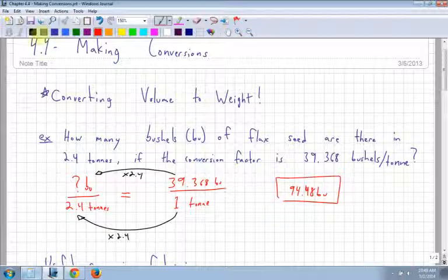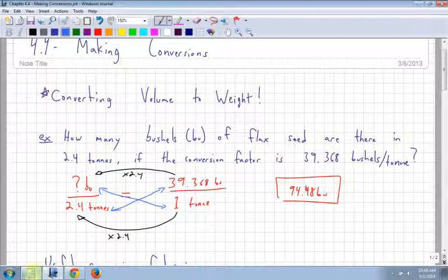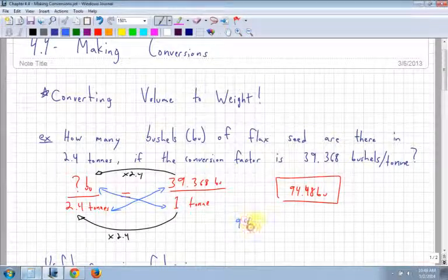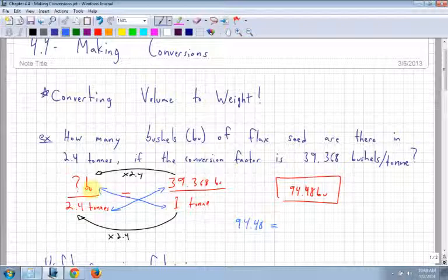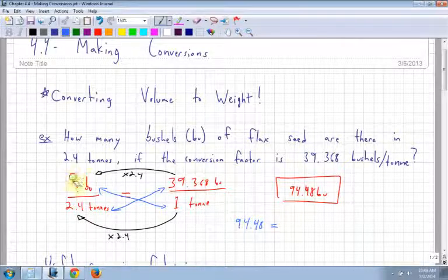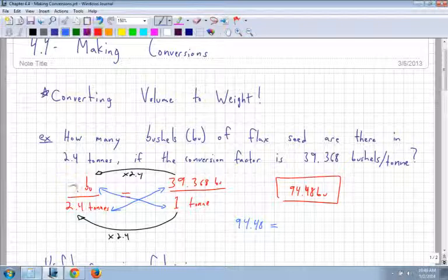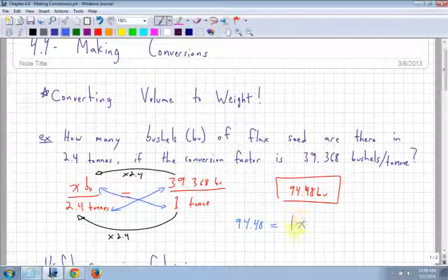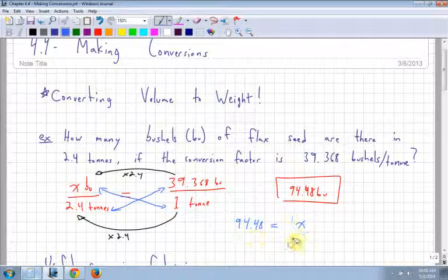If you were to do the cross multiplication, which you could do as well, you would basically just cross multiply these two values, and then cross multiply these two values, and you'll come up with exactly the same answer. But let's just do that. So 2.4 times your 39.368, which is equal to 94.48, is equal to 1 times x. It's actually better to use variables. So 1 times x is just 1x, and then I would have to divide by the value in front of x to solve. But because it's just a 1 in this case, it doesn't change the value. So you get the same answer, 94.48, regardless of which way you do it.